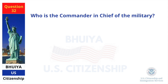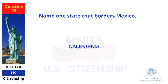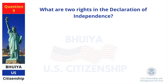Who is the commander-in-chief of the military? The President. Name one state that borders Mexico. California. What are two rights in the Declaration of Independence? Life. Liberty.